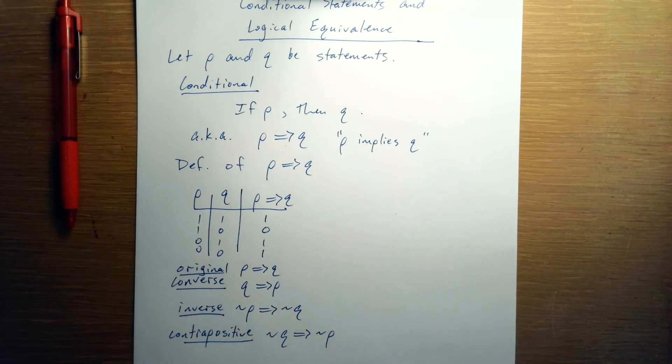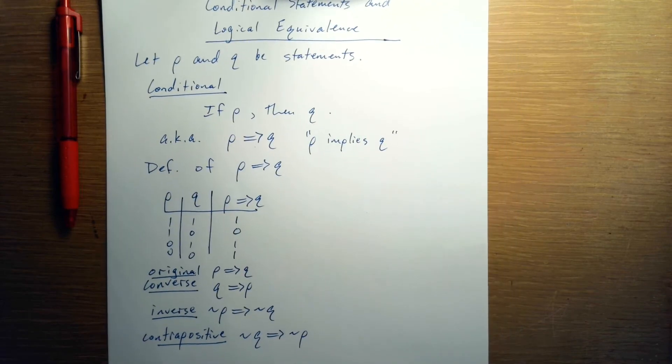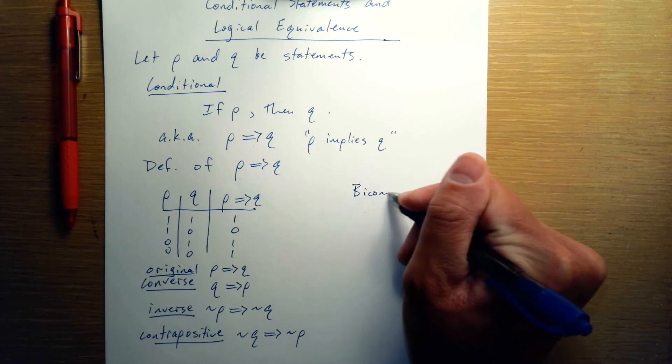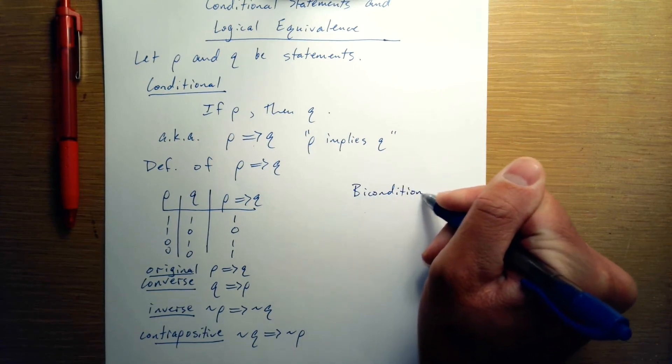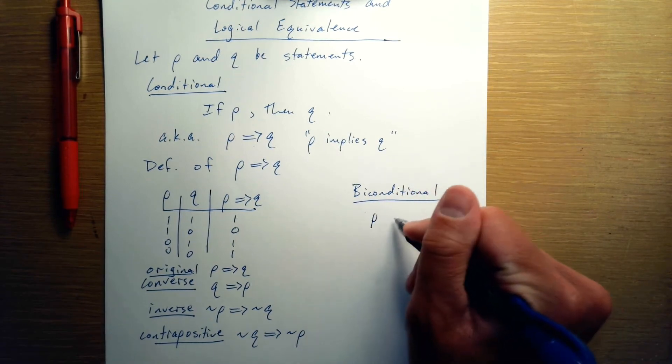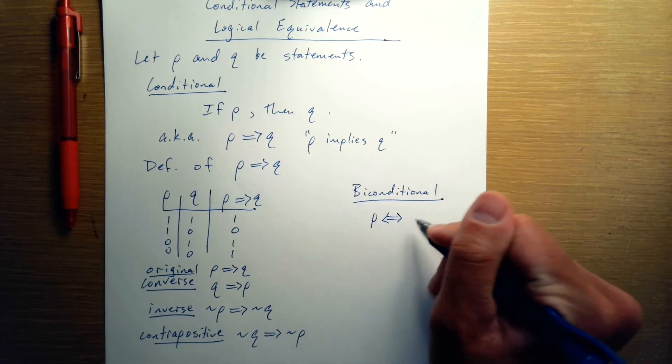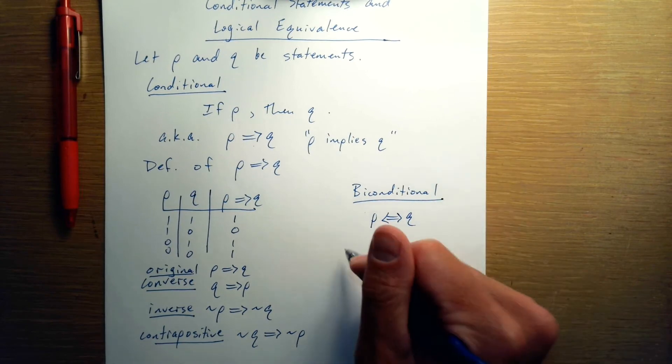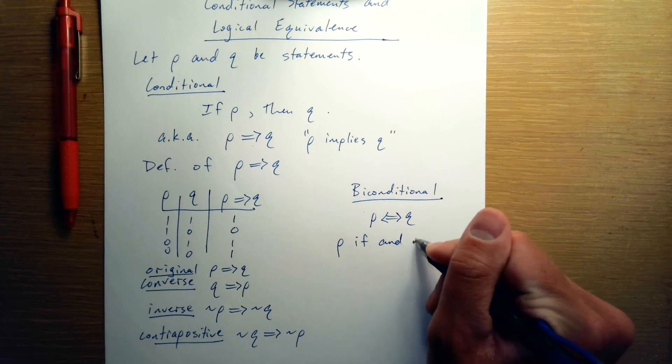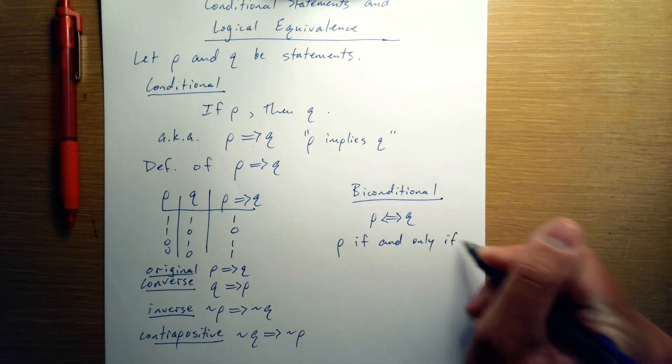These are all derived from the original statement. And let's define also the biconditional. The biconditional looks like this: P double arrow Q, which is often read P if and only if Q.